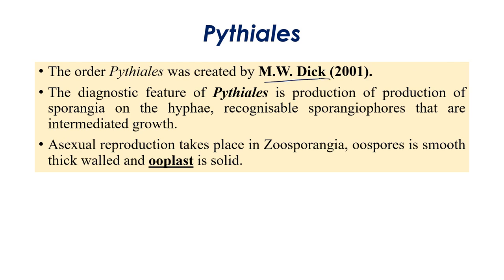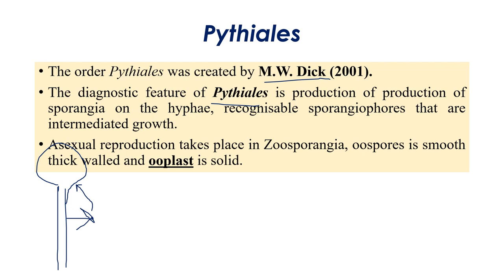The diagnostic feature of all fungi that come under Pythiales is the production of sporangia and the sporangiophore. The sporangiophore is a stalk-like structure, and on top of it a globose or bulb-like structure called the sporangium is produced. This is the recognizable feature of the order.